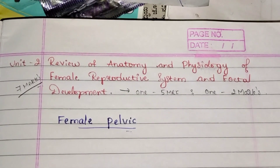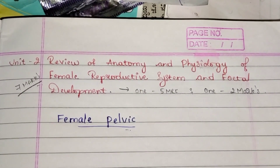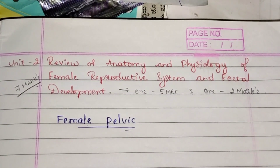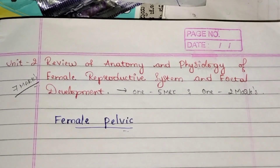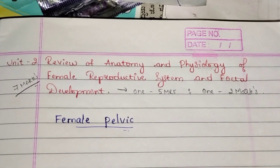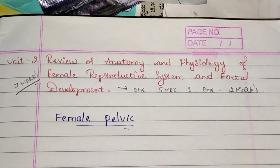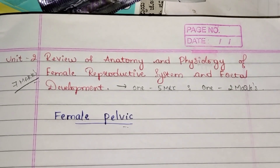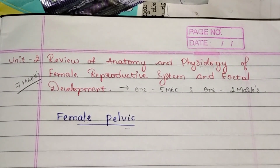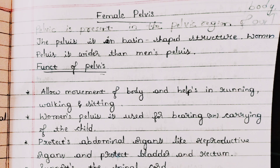Review of anatomy and physiology of the female reproductive system and fetal development — this is your second unit of OBG. From this chapter you will get seven marks: one question is for five marks and one question is for two marks. First you will learn about the female pelvis, and if you learn the diagram it will be very useful.